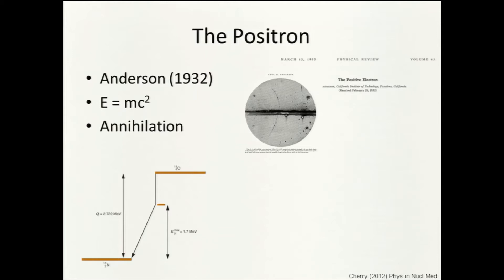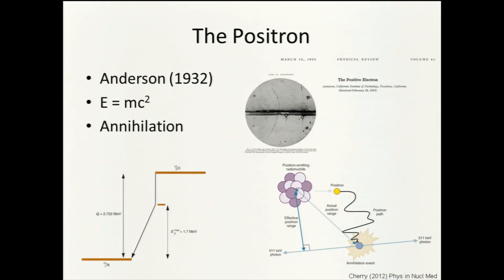We run this equation in reverse — going from mass to energy — with annihilation. The positron-emitting nucleus emits a positron, which starts with kinetic energy but slows down moving through tissue. When it meets an electron, they combine and annihilate with matter-antimatter annihilation, changing mass into energy. The mass of that positron and electron comes out as two back-to-back photons, each with 511 keV. Because the positron and electron are nearly still, conservation of momentum means these photons come off almost always on a straight line, which we make use of in the imaging.